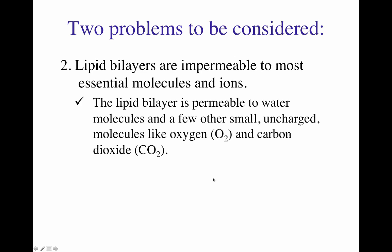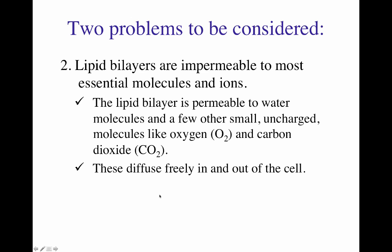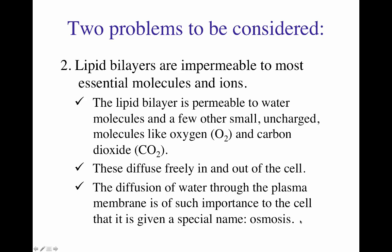Molecules that are naturally permeable — like oxygen — diffuse freely in and out of the cell. The cell uses oxygen for respiration; out comes carbon dioxide as a product, so there is no active transport needed for those. The diffusion of water through the plasma membrane is extremely important to maintain cell physiology, and we call that osmosis. It can change the life of a cell if the cell cannot manage how water freely diffuses: too much inside and the cell can burst; too much outside and the cell will dehydrate and die.